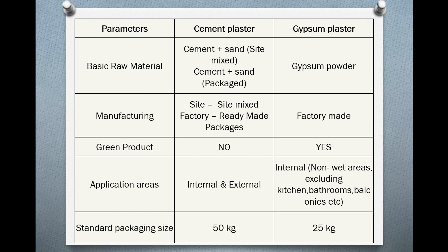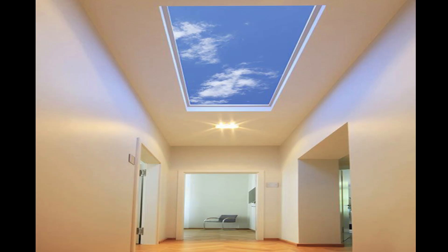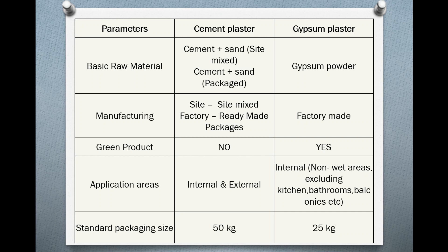Next: application area. Cement plaster can be used for both internal and external surfaces. Gypsum plaster is used only for internal areas — non-wet areas — not in kitchens, bathrooms, or balconies, and not where the wall is open to the sky. Cement plaster can be used on external walls and ceilings.